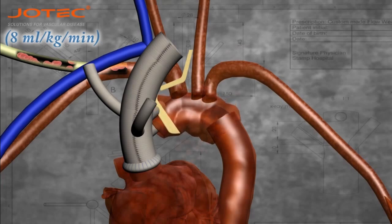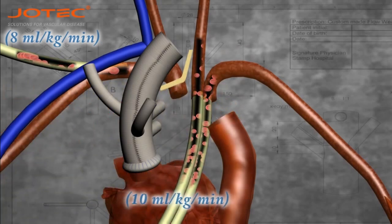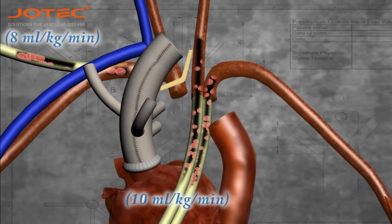Resection of the aortic arch. Two separate cannulas will provide perfusion for the left carotid artery and the left subclavian artery.